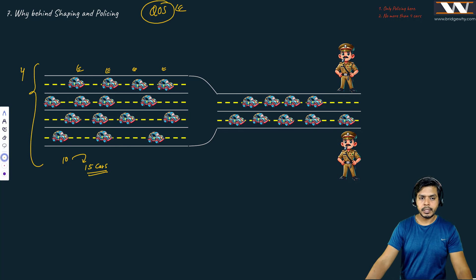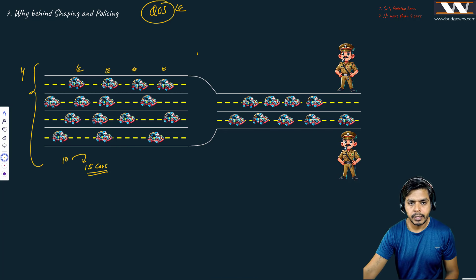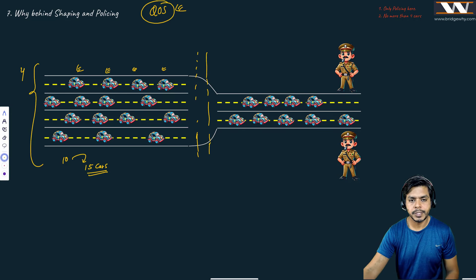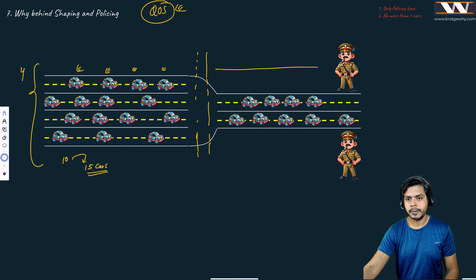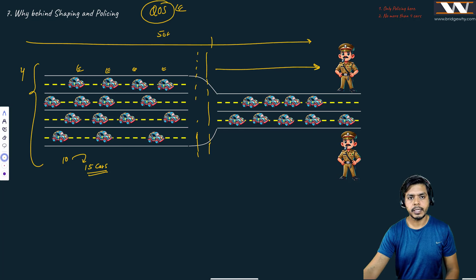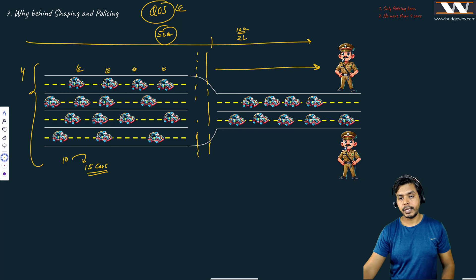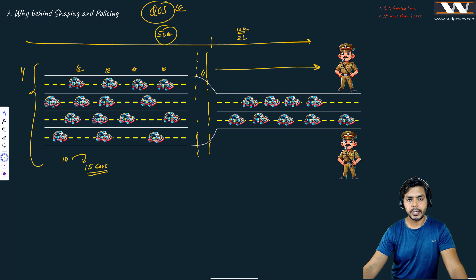Now this four-lane highway has a junction, and unfortunately we do not have space for all four lanes further down the line. The starting 50 kilometers is a four-lane highway and the ending 10 kilometers is only a two-lane highway. If that is the case, you all know there is going to be congestion right here.